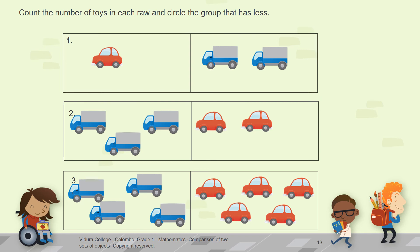First row, one red car and two blue lorries which has less. Circle that. Second row, three blue lorries and two red cars which has less. Circle that sets of objects. Last one, four blue lorries and five red cars which has less. Circle that side.